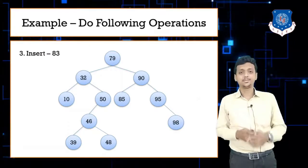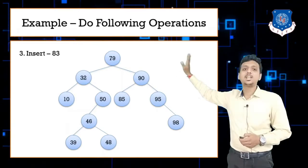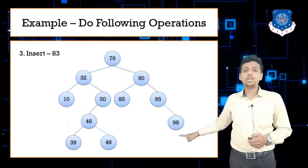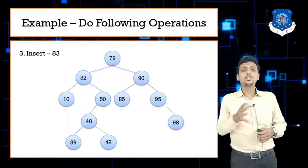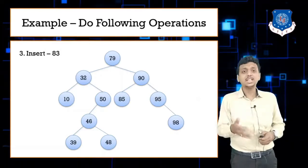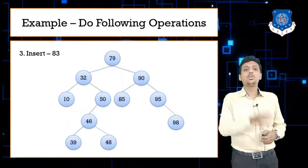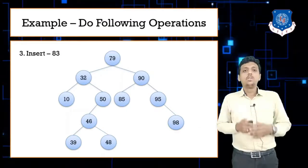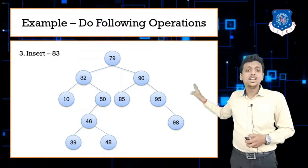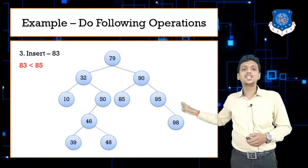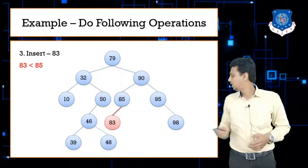Next, insert 83. Note that your figure must already contain values 48 and 98 from the previous operations. To insert 83, start comparison from the root 79. 83 is greater than 79, so go right. 83 is less than 90, so go left. 83 is less than 85, so 83 must be inserted on the left side of 85.